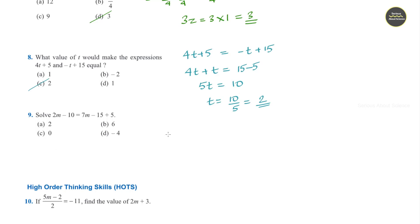Question number 9. Solve 2m minus 10 is equal to 7m minus 15 plus 5. That is 2m minus 10 is equal to 7m minus 10.